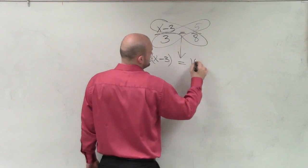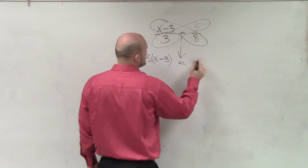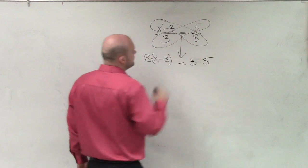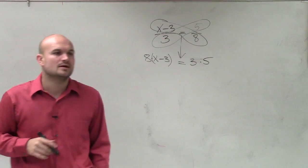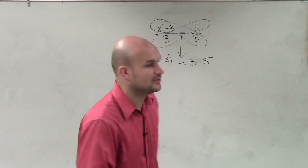Then over here, I have 15. I'm sorry, let's write it like this: 3 times 5. So now I apply distributive property.